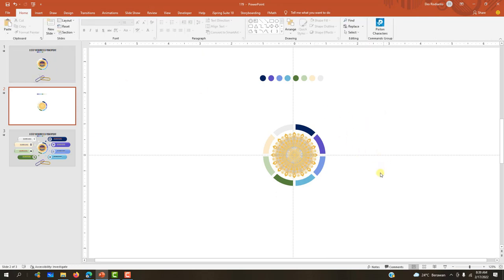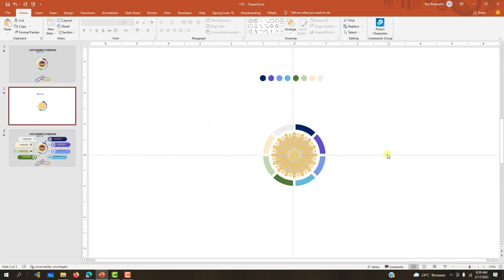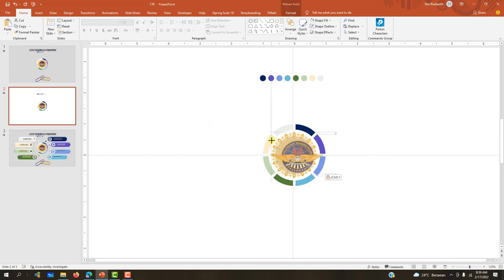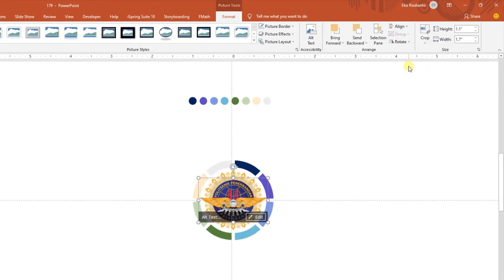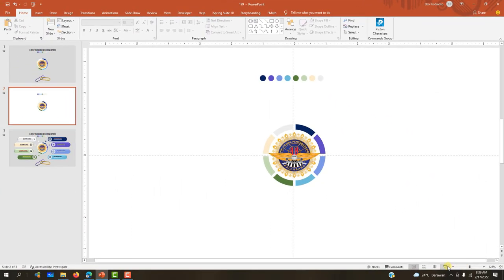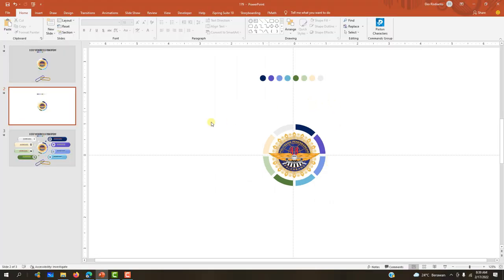Kemudian kita bisa masukkan di sini. Teman-teman nanti copy saja, tapi bagaimana cara membuat animasi melingkar seperti ini, teman-teman sudah mendapatkan tutorial sebelumnya. Kemudian di sini copy paste saja. Ini karena bentuknya terlalu besar, mungkin kita bisa perkecil dengan cara tekan Shift lalu tekan dengan mouse seperti ini. Kemudian kita letakkan di bagian tengahnya. Biar meyakinkan posisinya ada di tengah, teman-teman pilih menu Format, Align Center, kemudian Align Middle.